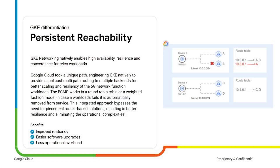Moving on to persistent reachability. In the on-premises world, telco workloads heavily rely on constructs like static IP addresses and ECMP, or equal-cost multipath routing, for dependable reachability. Kubernetes out-of-the-box doesn't natively support these constructs. GKE bridges these critical gaps with integrated APIs. Our persistent IP API provides true static IP support for your containerized workloads, and for ECMP-like functionality, we introduce the GKE Route API. These GKE integrated APIs offer a more cloud-native, yet equally robust approach to describing reachability for your telco workloads.